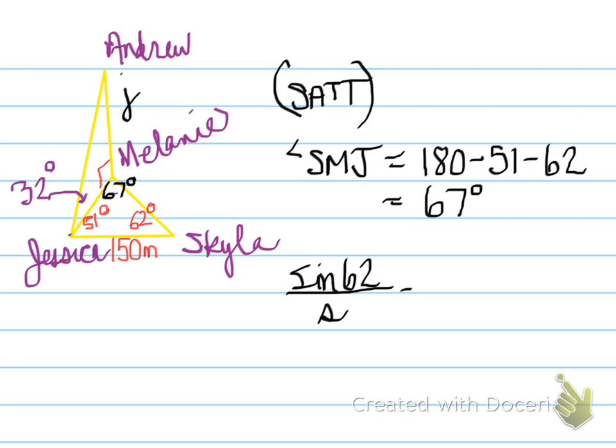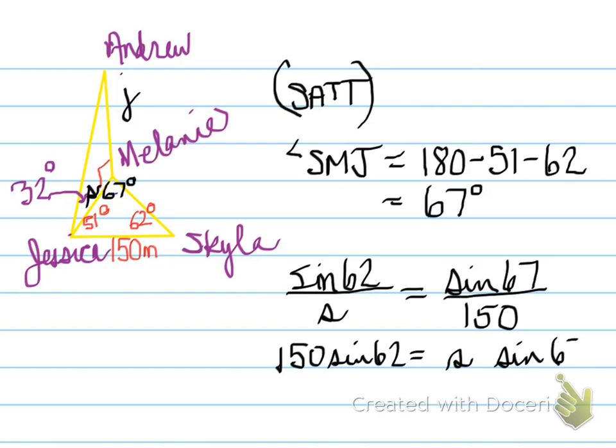So sine of 62 over S, S being the side that's across from Skyla, also known as the side between Jessica and Melanie. So the side that connects Jessica and Melanie is equal to sine 67 over 150. This is using sine law, folks. So we find out that once we cross multiply, that S is equal to...